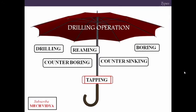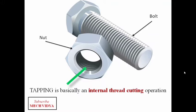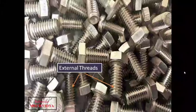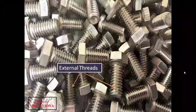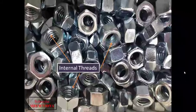Suppose we have a nut and bolt and we want to clamp the bolt inside the nut. To do this, we have to cut some threads inside the nut — these internal threads are made by the tapping process. Note that threads on a bolt are external, and tapping is used only for internal thread cutting operations.